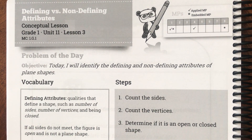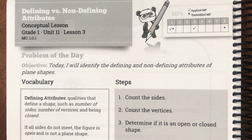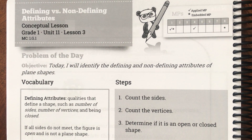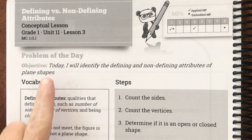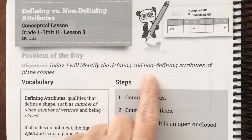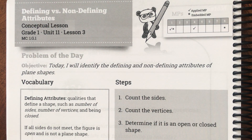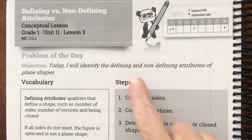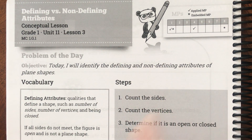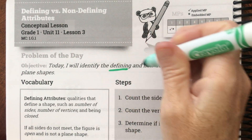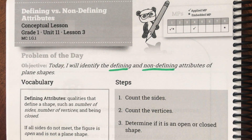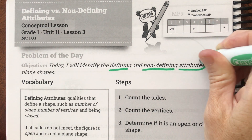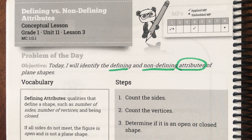Good morning first graders! Today we are on page 219 of your student journal and we are going to be continuing with geometry and talking about shapes, but we are adding something new today. Our objective for the day says: 'Today I will identify the defining and non-defining attributes of plain shapes.' Let's underline those important words — defining, non-defining — and the big word is attributes.